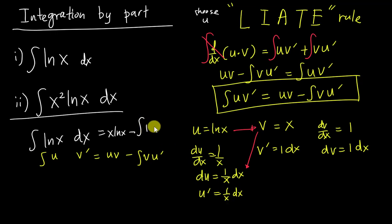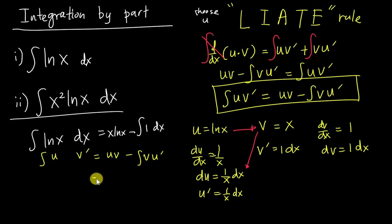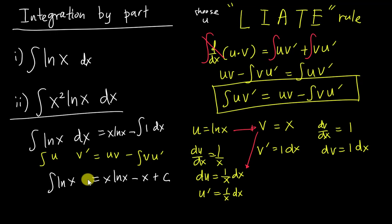Multiplying x times (1/x) gives 1, so we're integrating 1·dx. Integrating 1 gives x. Therefore the final answer is x·ln(x) minus x plus C. That is the result when you integrate ln(x)·dx.